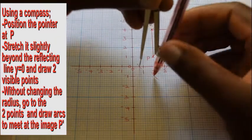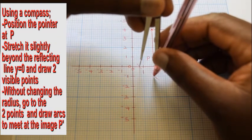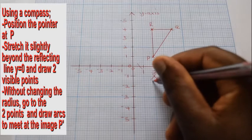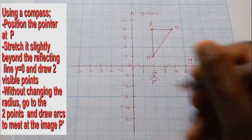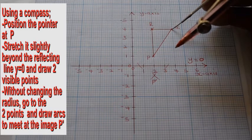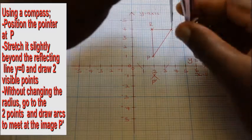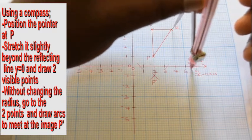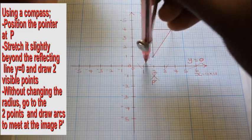Do the same for the second cross. Make a second arc and let it intersect with the first arc. The intersection of the arcs form the image P' of the object point P.